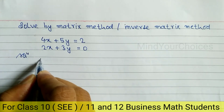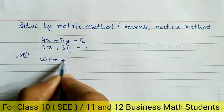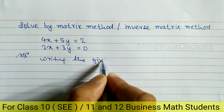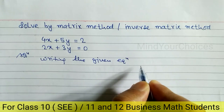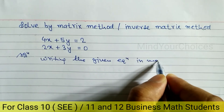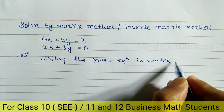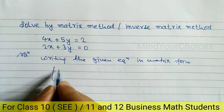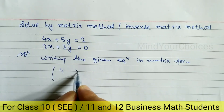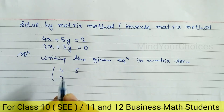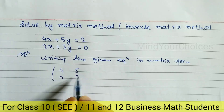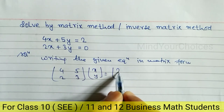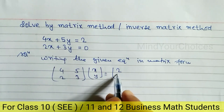First of all, we have to write the given equations in matrix form. The coefficient of x is 4, so we write 4; coefficient of y is 5, so we write 5; coefficient of x in the second equation is 2, so we write 2; coefficient of y is 3, so we write 3. Then we write the variable matrix [x, y] equal to the constants [2, 0].